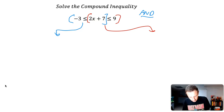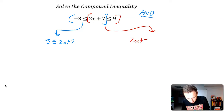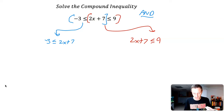So I have the first inequality: negative three is less than or equal to two x plus seven. Then I have the other inequality: two x plus seven is less than or equal to nine. I'll solve both of them separately and then meet back up to talk about our solutions.